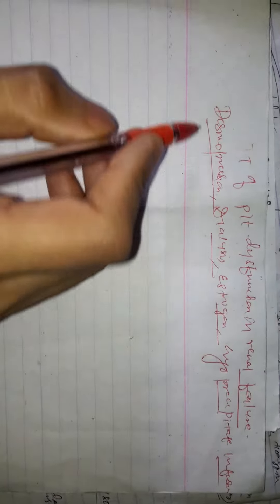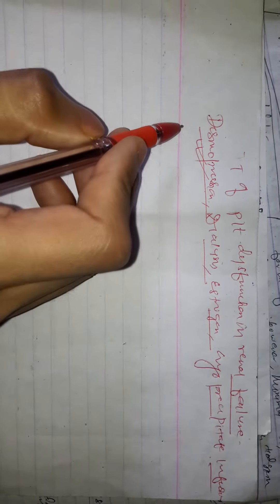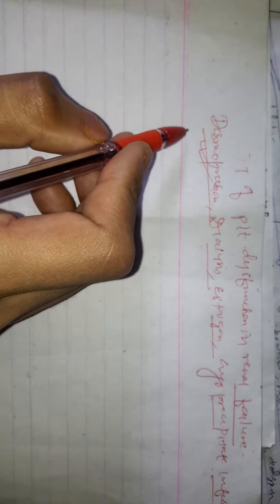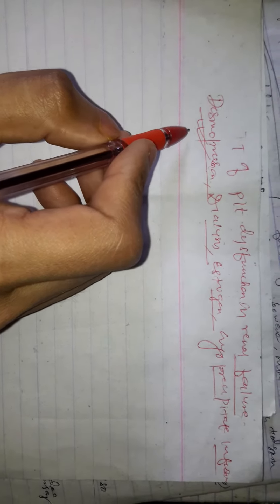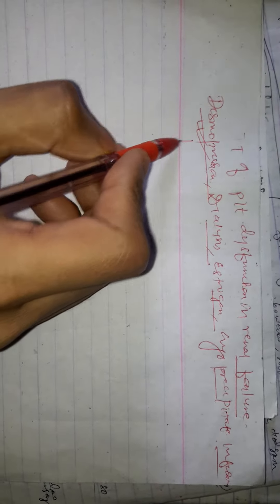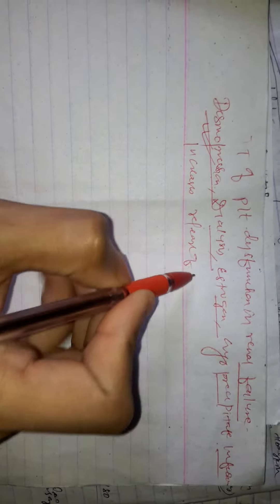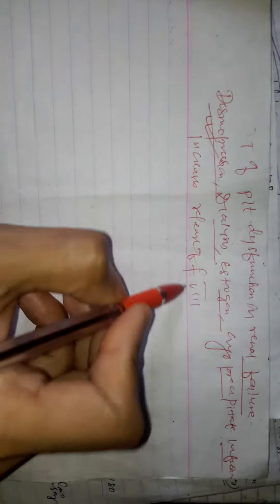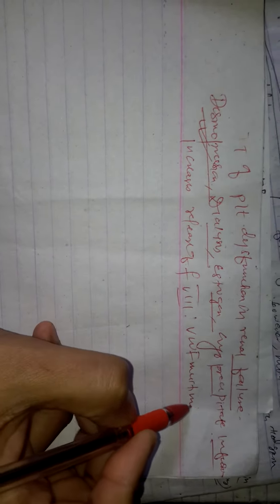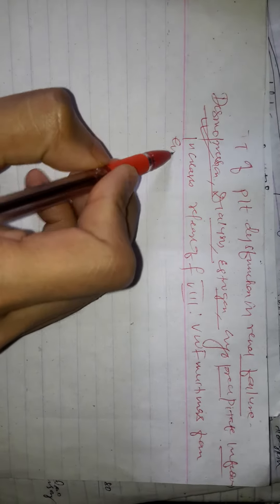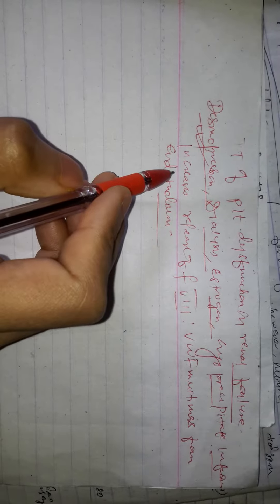Among them, desmopressin is the least toxic and most effective method. What is the mechanism of action of desmopressin? It increases release of Factor VIII and von Willebrand factor multimers from endothelium.